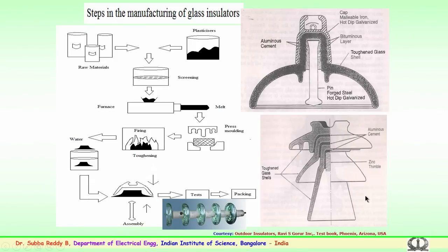This is a pin type insulator normally employed for lesser voltages. Different pin insulators are jointed with the help of alumina cement and toughened glass shells — it could be two or three shells joined depending upon the voltage and creepage requirement.